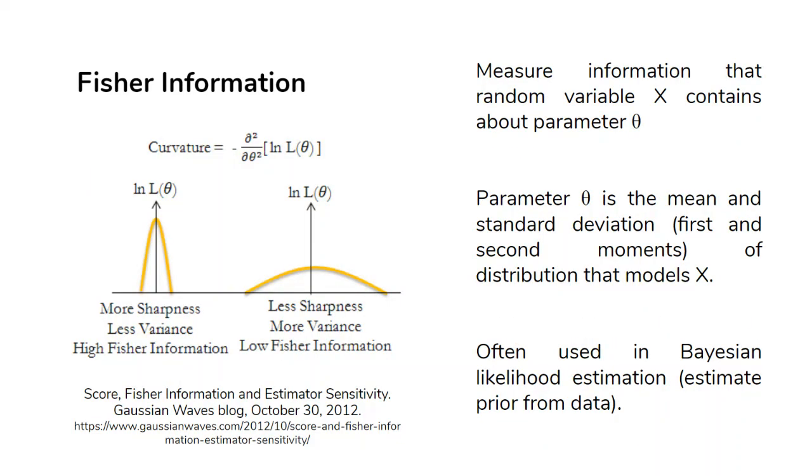Fisher information measures information that random variable X contains about parameter theta. Parameter theta is the mean and standard deviation of the distribution that models X, the first and second moments. It's used in Bayesian likelihood estimation to estimate a prior from data. Fisher information is a good way to look at model-free data and compare it to a model of the variable.